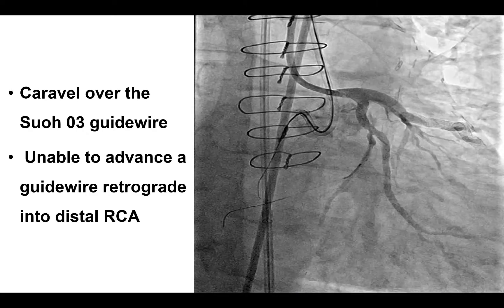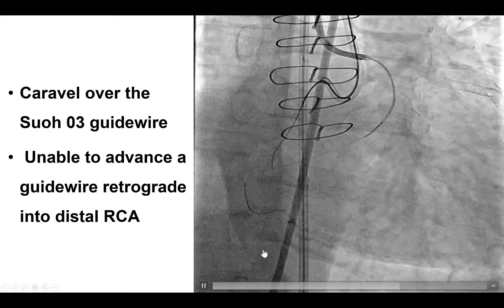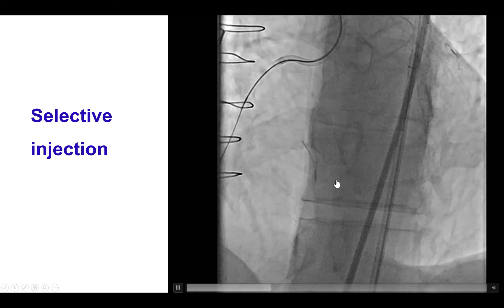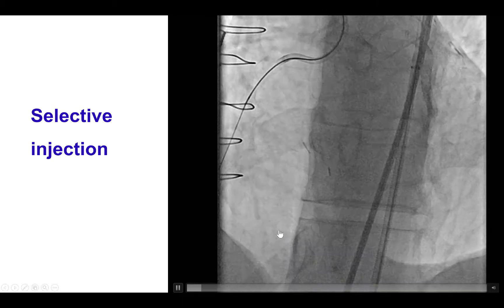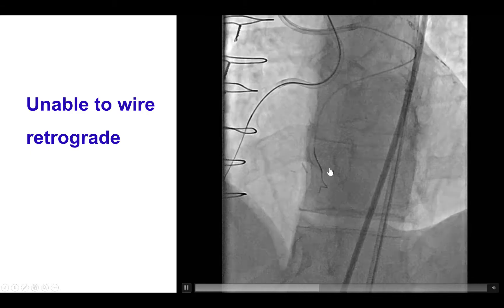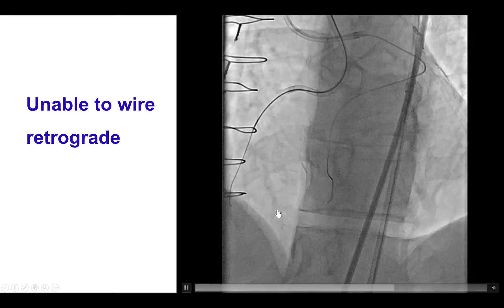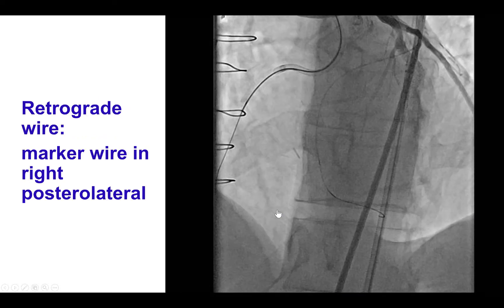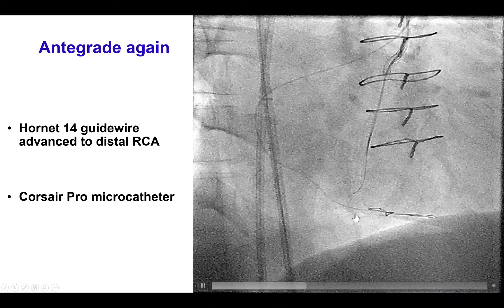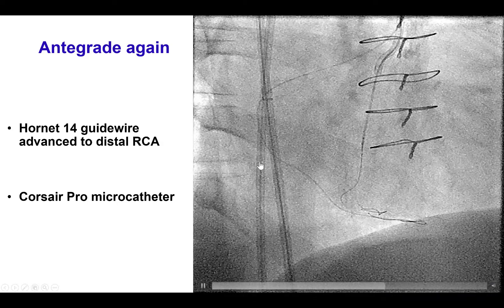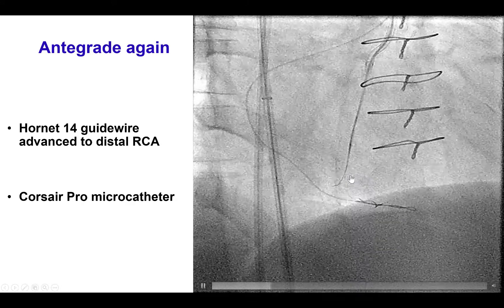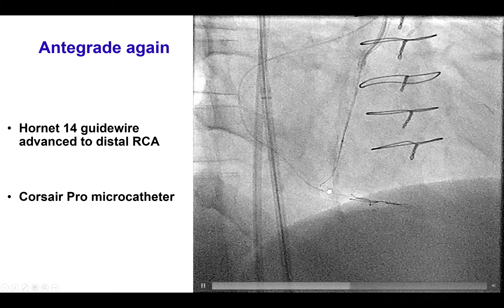We then had a difficult challenge — inability to advance the wire retrograde. It kept going into the right posterolateral branch instead of taking the course going backwards towards the distal right coronary artery. We tried multiple different wires and multiple different projections, but we could not advance the retrograde guide wire into the distal right coronary artery. As a result, we decided to leave it as a marker into the right posterolateral branch and came back in the antegrade direction again. We had a guide wire into this acute marginal branch, and this time, after multiple attempts, we finally used a Hornet 14 guide wire that took a different course and entered the distal right coronary artery, as confirmed with dual injection.